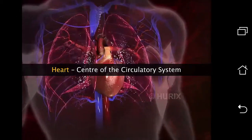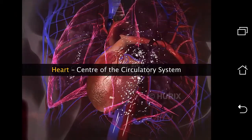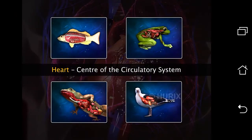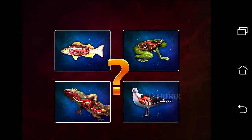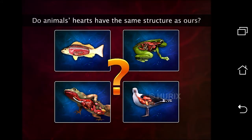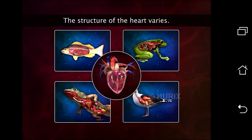Heart is the vital organ of the circulatory system in animals. Is the structure of the heart the same in fishes, amphibians, reptiles, birds and mammals? No, the structure of the heart varies among the different groups of animals.